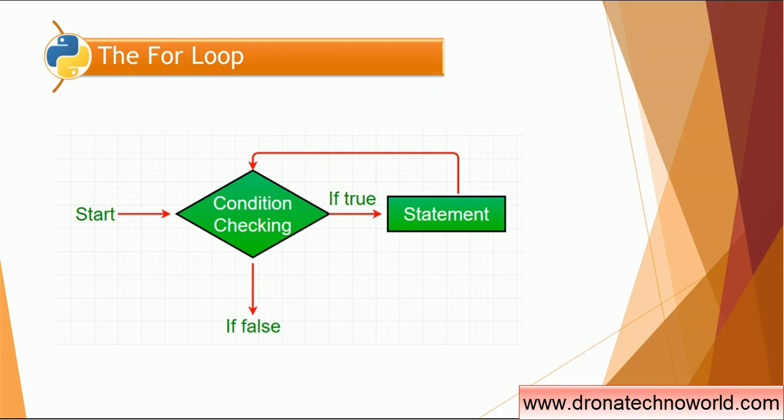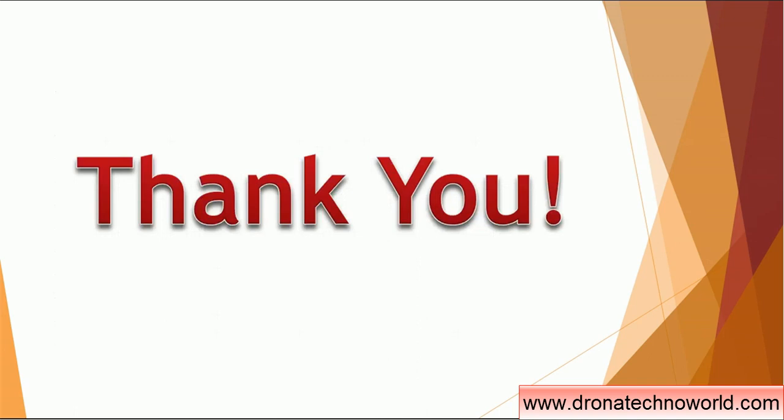This is a very simple diagram to explain that. The program starts, then condition checking happens in the for loop. If the condition is true, the logic is executed and it runs in a loop until the condition is satisfied. If the condition is false, the loop will be exited or completed.